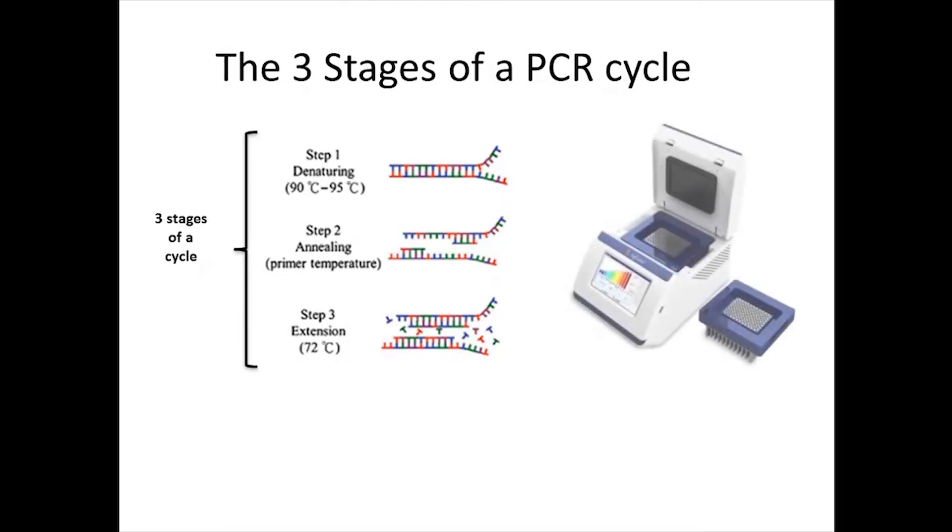The machine used for this process is called a thermocycler. The thermocycler can be programmed to repeat the cycle as many times as needed. Usually, the cycle is repeated 35 to 40 times. This process is called amplification of the sequence.